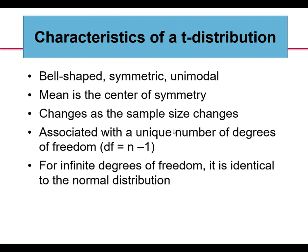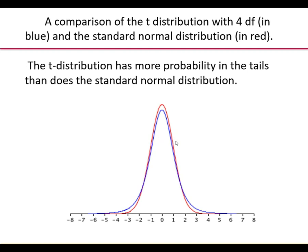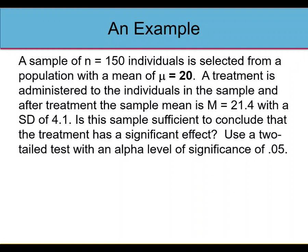T-distributions are very much like a z-distribution: bell-shaped, symmetric, and unimodal. The mean is the center of symmetry, it changes as sample size changes, it's associated with a unique number of degrees of freedom — n minus 1 — and for infinite degrees of freedom it's identical to the normal distribution. Here we have a picture: in red is the standard normal distribution with a higher peak and skinnier tails, and the t-distribution with four degrees of freedom has heavier tails and less probability in the hump.